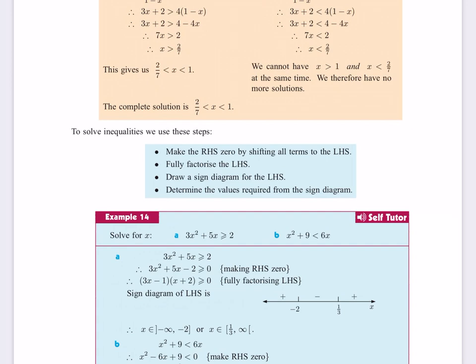The first one is a traditional one: 3x² + 5x ≥ 2. So they bring everything to the left and make that zero. They fully factorize it and then make a sign diagram.